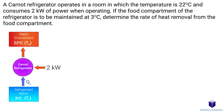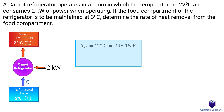In this problem, we have a Carnot refrigerator that needs to maintain a temperature of 3 degrees Celsius. We need to figure out the rate of heat removal. Let's start by writing down what we know. The room temperature is 22 degrees Celsius, which is our TH. The refrigerator consumes 2 kW of power, and the temperature to be maintained is 3 degrees Celsius, which is our TL. Our goal is to figure out QL, which is the heat removed from our refrigerated space.